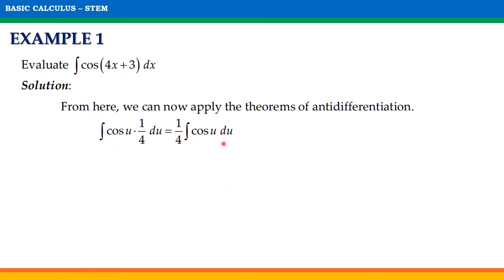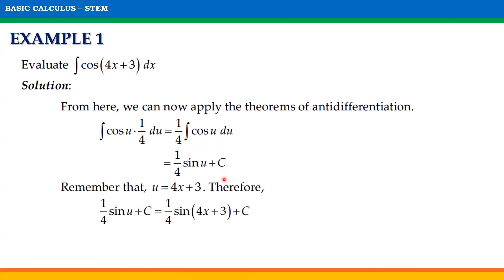The antiderivative of cosine u times one-fourth du is equal to one-fourth times the antiderivative of cosine u du. According to theorem, the antiderivative of cosine u du is equal to sine u plus c. Thus, it will be equal to one-fourth sine u plus c. Substituting 4x plus 3 back for u, our final answer is one-fourth sine(4x plus 3) plus c.